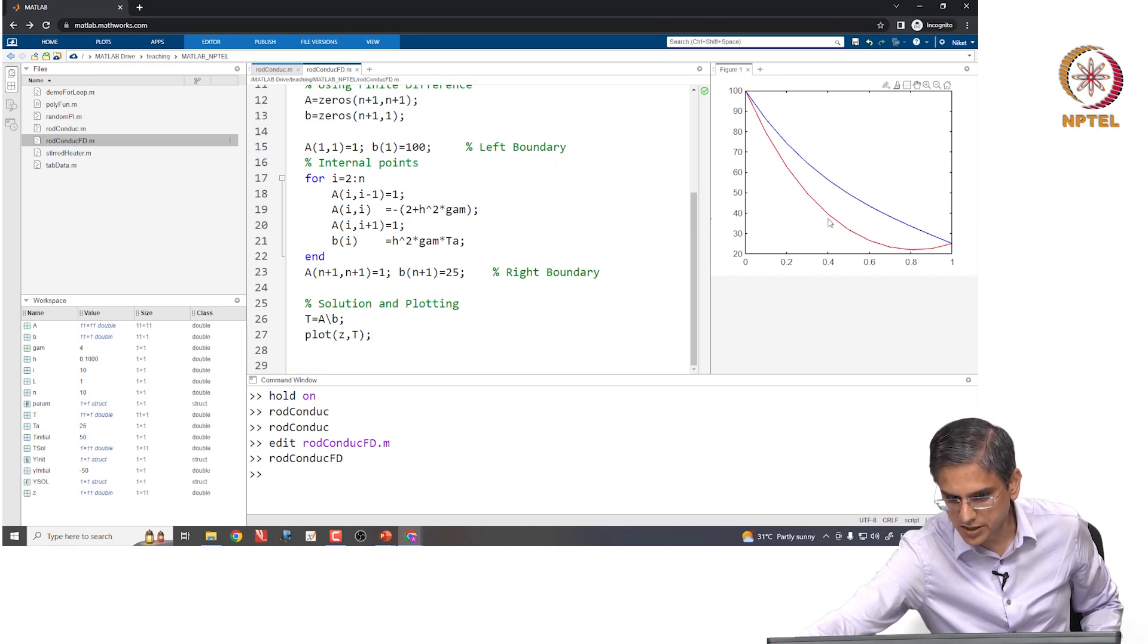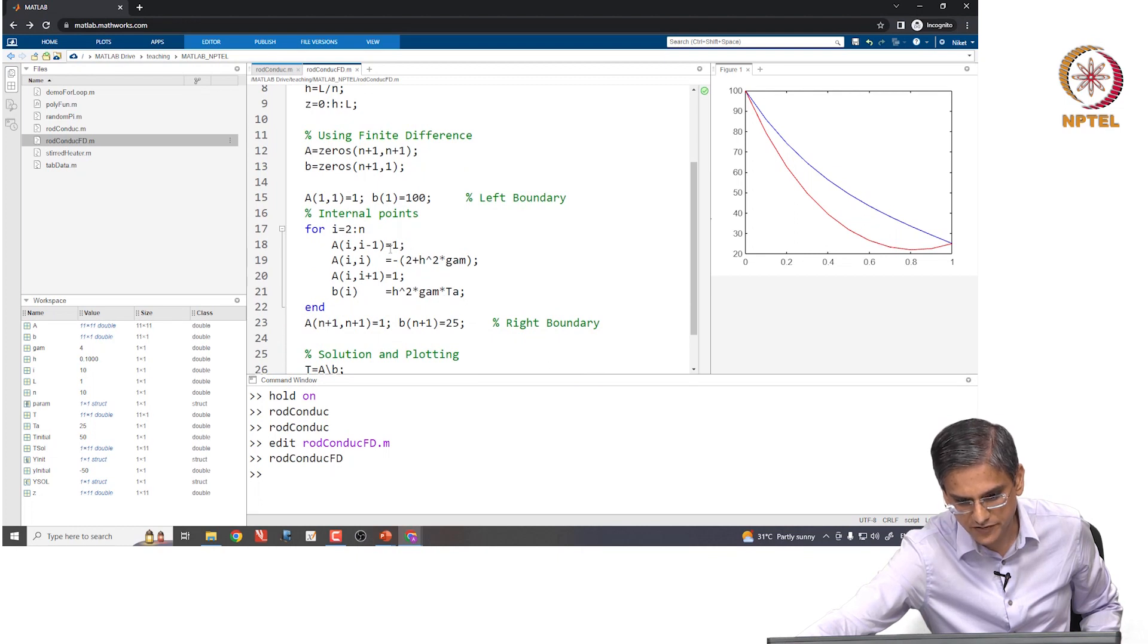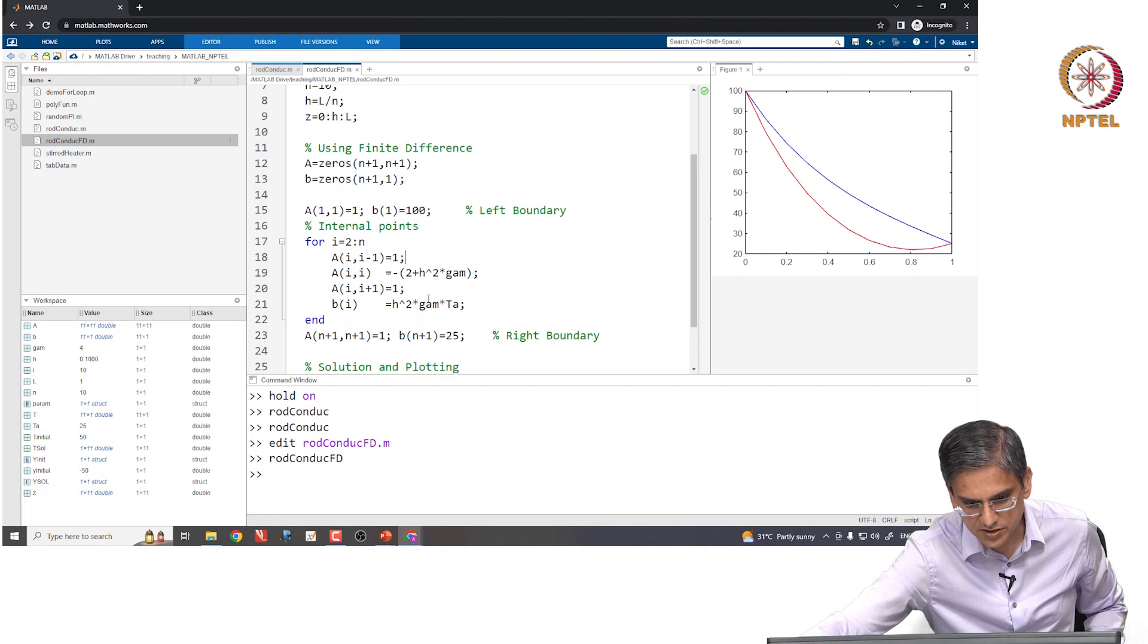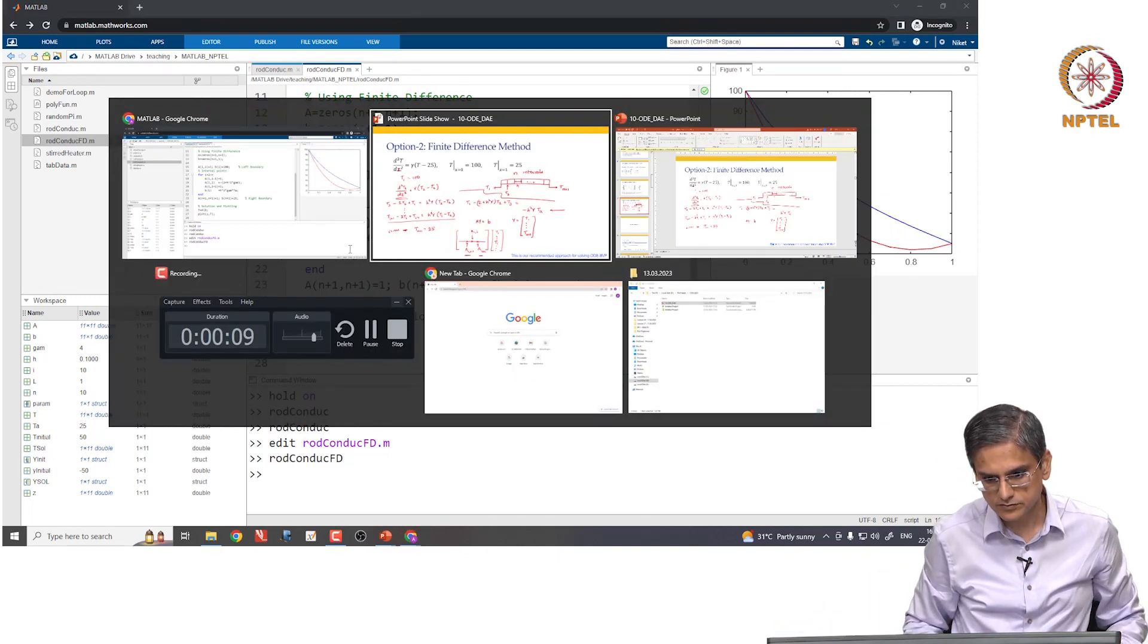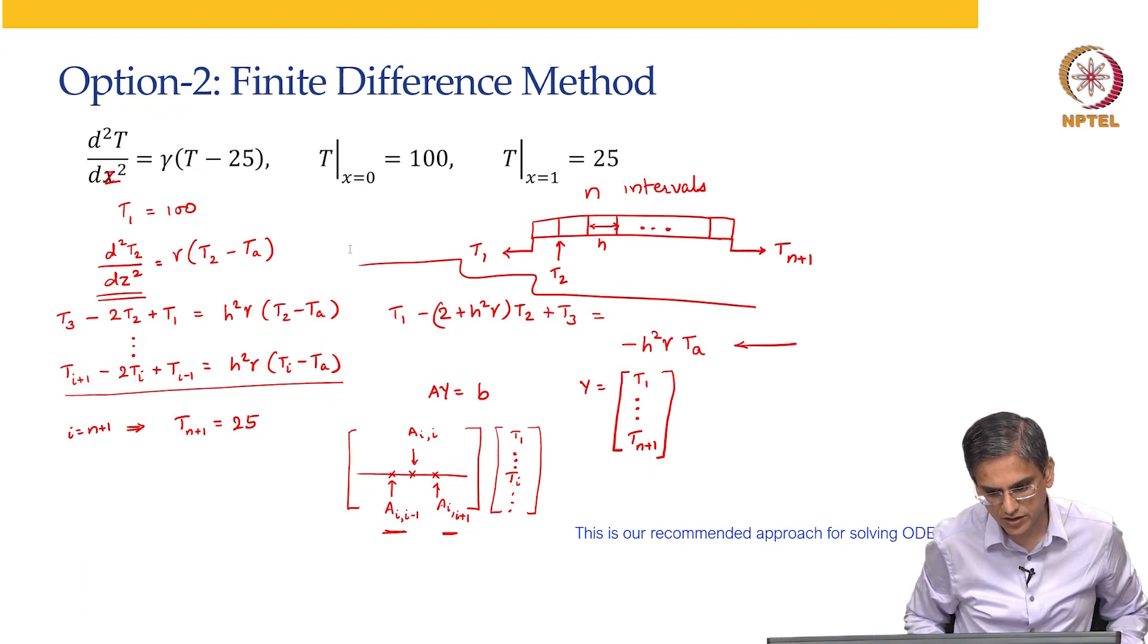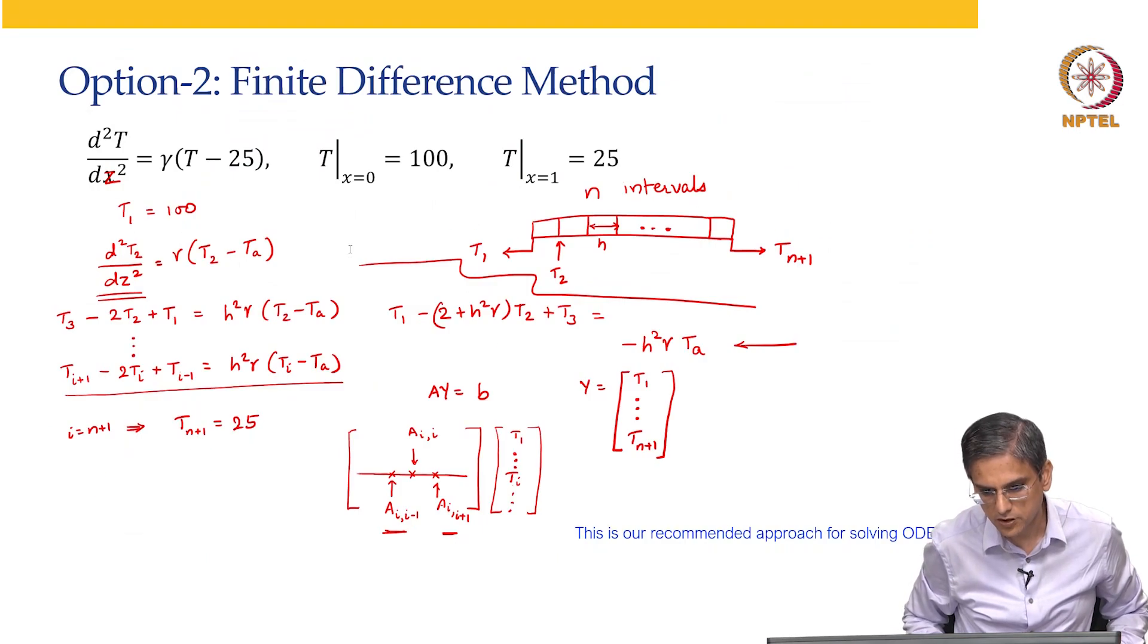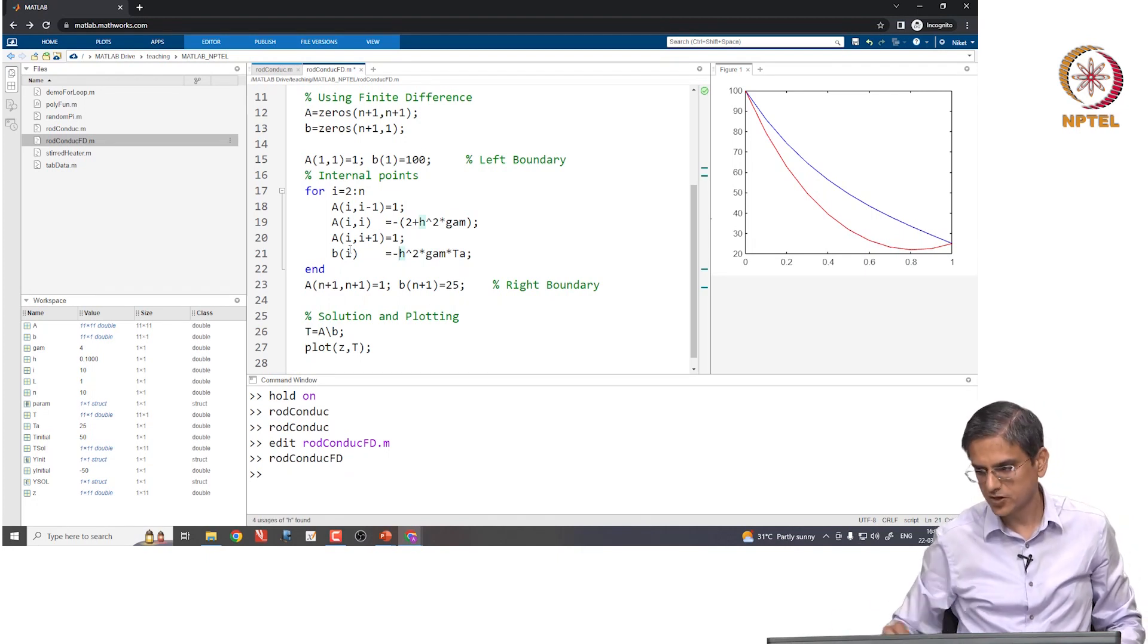And so, there seems to be some kind of a problem over here. The problem might be with respect to some of the parameters that we have, we might not have put them exactly right. So, let us look at each and every parameter once again. So, the value of T A is 25, gamma is 4, our H is L by n. So, all of that is fine. So, we have minus 2 plus H square gamma that is correct. Minus 2 into H square plus gamma and our B i is negative H square T A. B i is negative H square T A. So, if we run this, we will get the correct values.